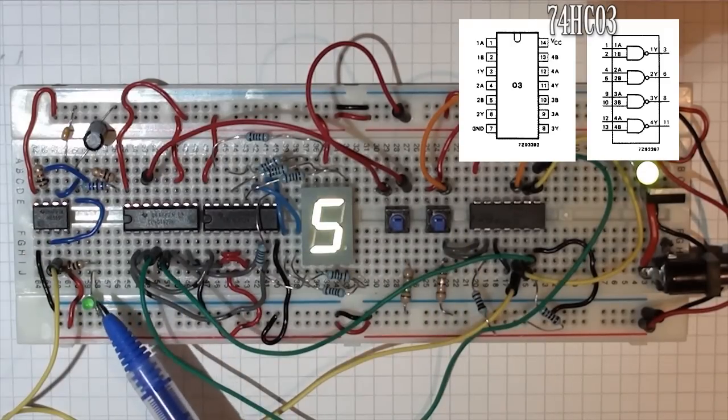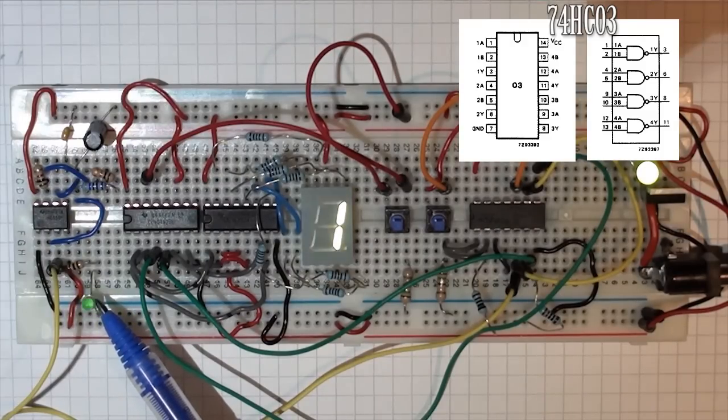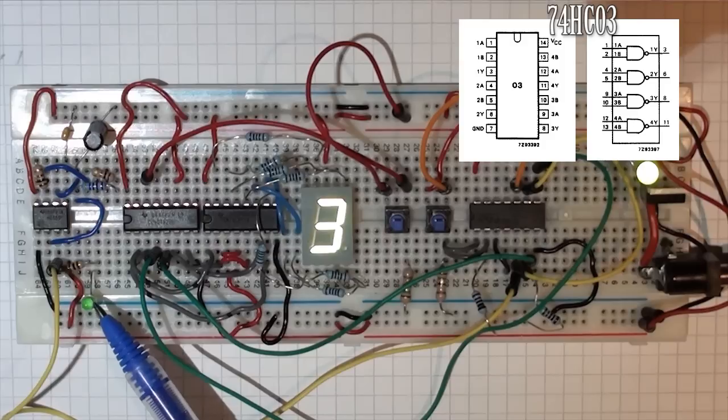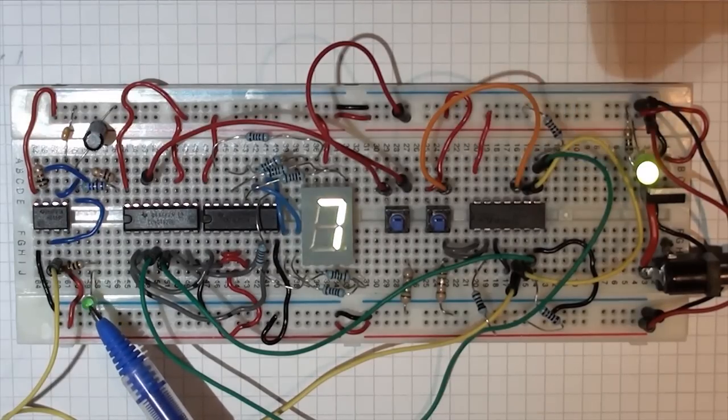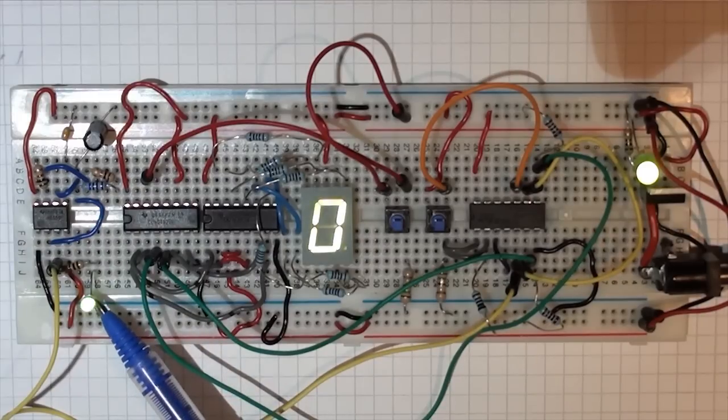But you can see now that in this case here, if you spotted it, in the last circuit, the original circuit, the number changed when the diode lit up. So it was on the rising edge. But you can see now that my number changes on a falling edge.